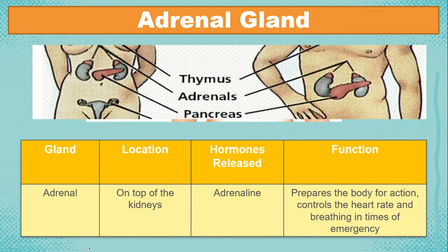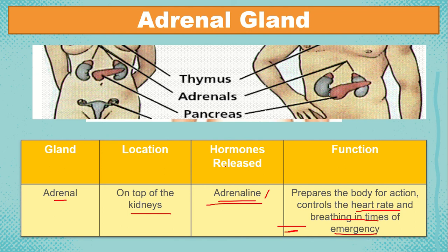Next, we have the adrenal gland, located on top of the kidneys. It releases hormones called adrenaline, also known as the emergency hormone — hence the term 'adrenaline rush.' It prepares the body for action, controls the heart rate, and breathing in times of emergency. It can also release hormones called epinephrine and norepinephrine, found in cardiac and other muscles.